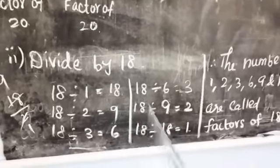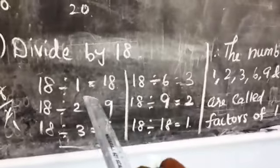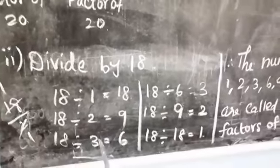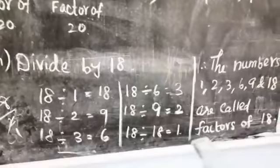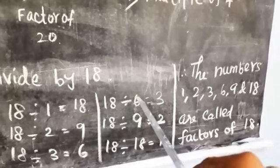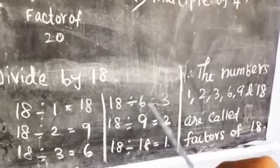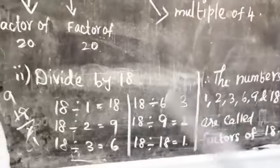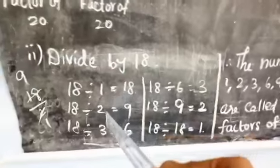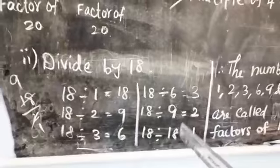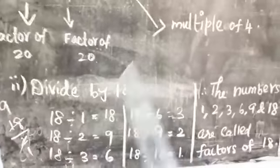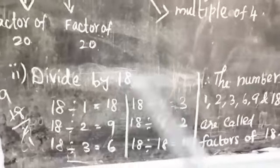Now let's verify: checking which numbers divide 18 exactly. 1 divides it, 2 divides it, 3 divides it. 4 does not divide 18 exactly, so 4 is not a factor of 18. 5 is not a factor of 18. 6 divides it. 7 does not divide it. 8 does not divide it. 9 divides it. So the factors of 18 are 1, 2, 3, 6, 9, and 18 — these are the numbers that divide 18 without remainder.